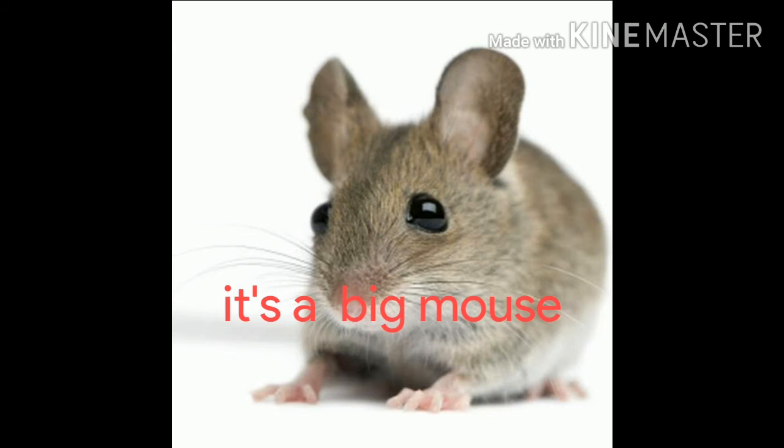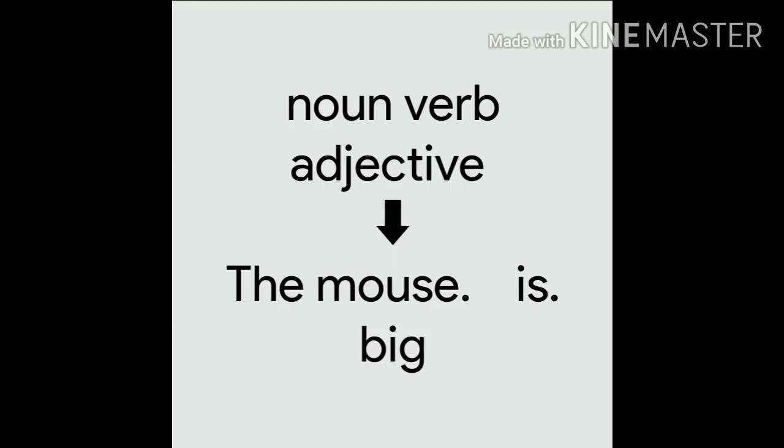Adjectives can go before a noun, like it's a big mouse. Big is the adjective but mouse is the noun.